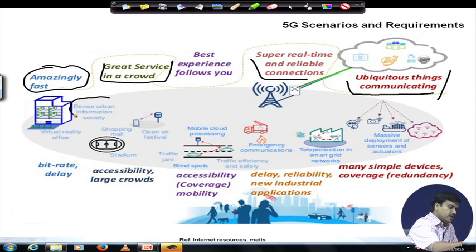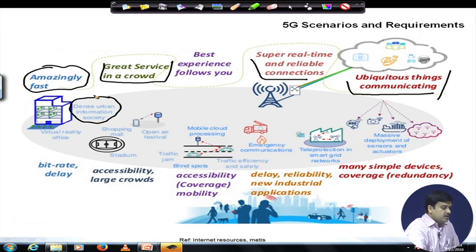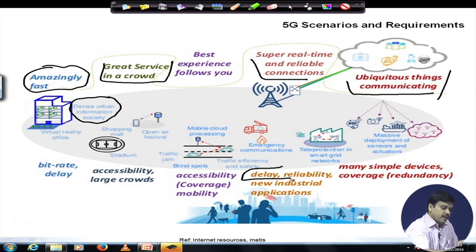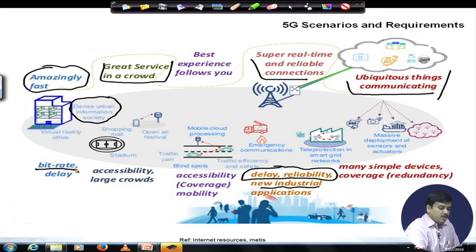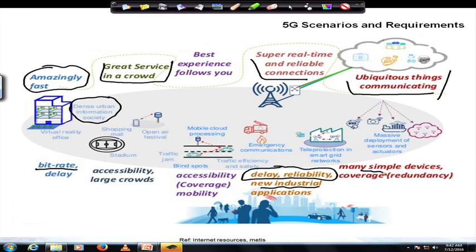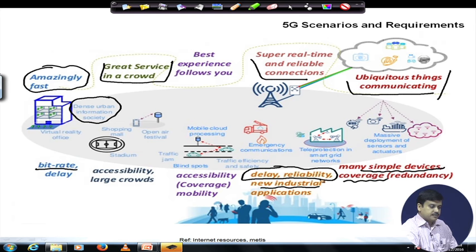Another very important 5G scenario is the dense urban information society, where a huge density of users would be present in a small location. There would also be requirements for services where delay and reliability would be very critical, for example industrial applications. There would always be the requirement of bit rate, support for many simple devices, and coverage requirements — whereas in 4G, the most common thread across all systems was the requirement for high data rate communications.